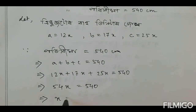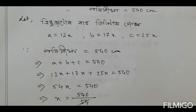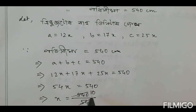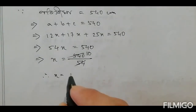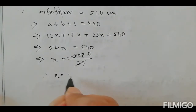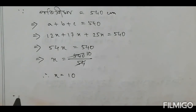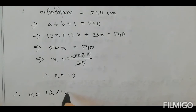540 divided by 54 is 10. Since 54 is 1 times and 540 is 540, therefore X equals 10.